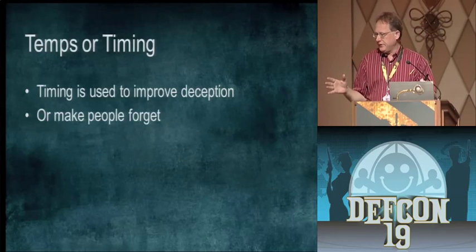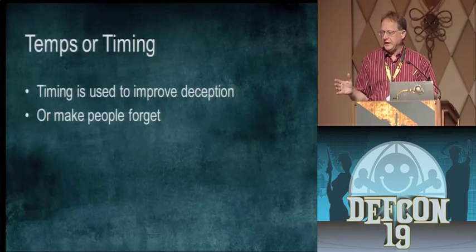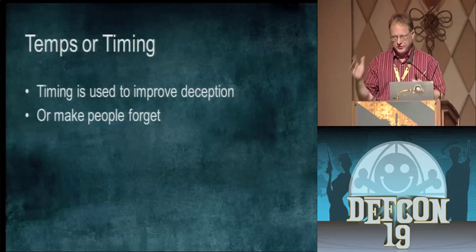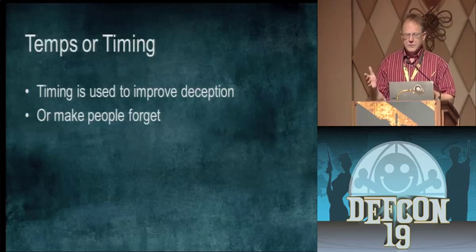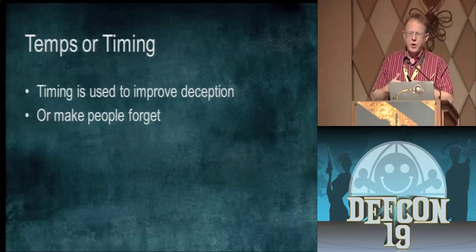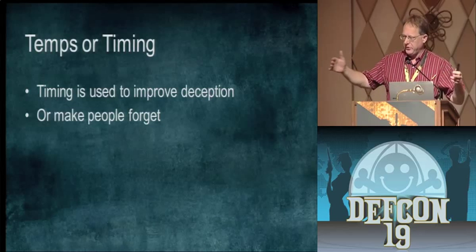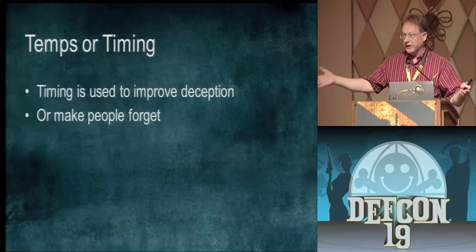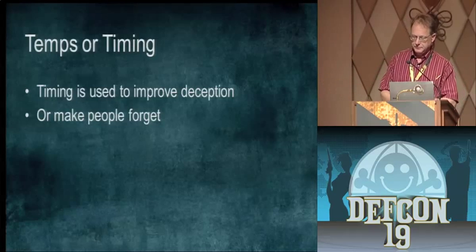The fourth action is timing. That's very important in magic — to get the timing just right. That can be applied to hacking too. For instance, if you're doing a port scan and you do it over a long period of time, like over a few months, it probably would not be detected.